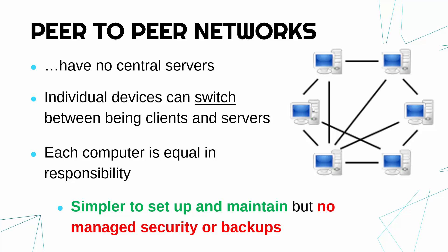Peer-to-peer is simpler to set up and maintain — you don't need to set up a fancy server, you just connect the devices. But because there is no centralised control, there is no consistently managed security or backups. Each individual device can make sure it has good security and takes backups, but there is no guarantee that it will happen. Malware can spread quite quickly between peer-to-peer networks because you can't guarantee your peer is keeping things as safe as you might be. In the past, these have been used to share things illegally because there is no one ultimately responsible. Things like blockchain and Bitcoin are peer-to-peer networks, so they're not necessarily bad, but the lack of control can be quite off-putting to many businesses.